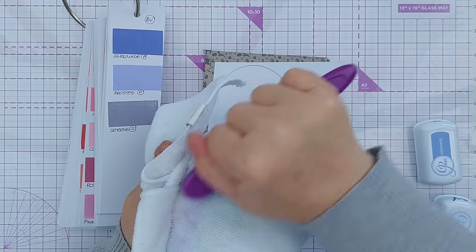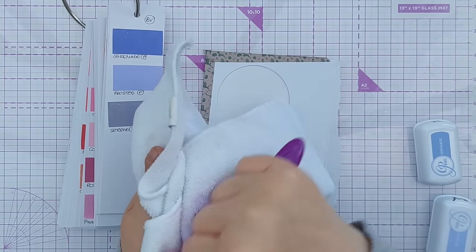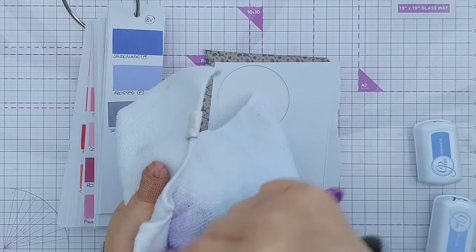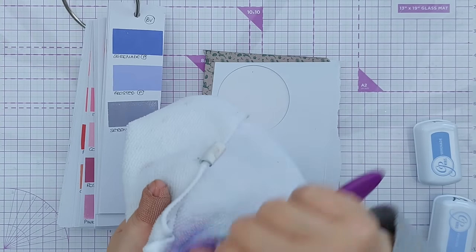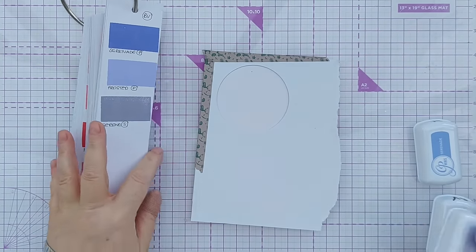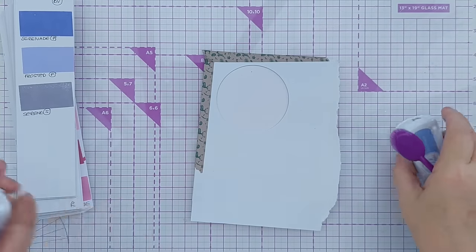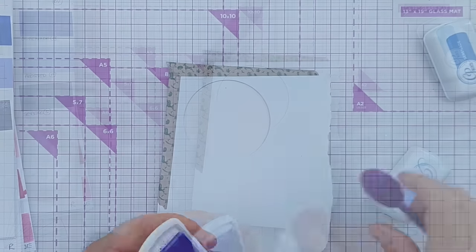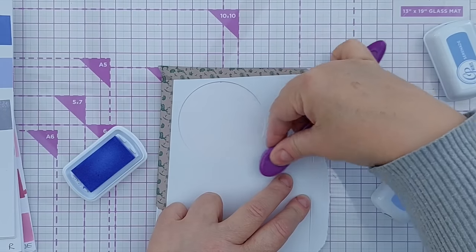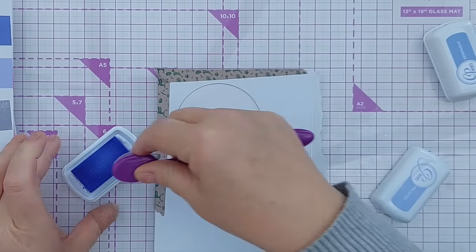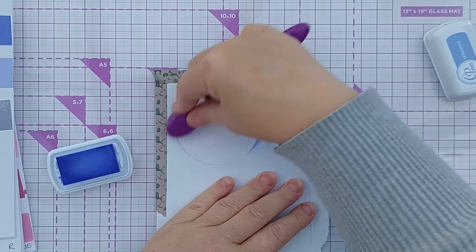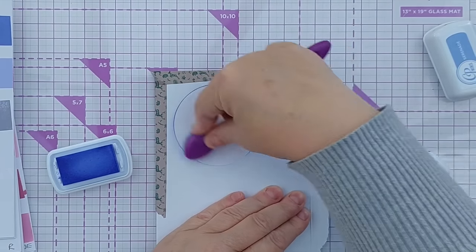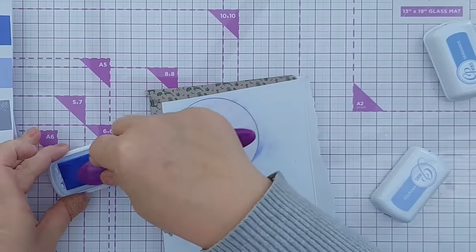I've got my purple blending brush here and I'll just brush it off to get any residual color off and we'll start with Frosted as it's kind of the lightest color and come in from the side and I think I'm going to try and blend the whole circle in Frosted.